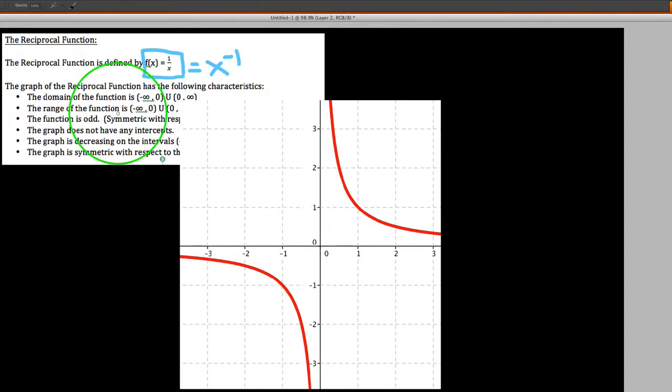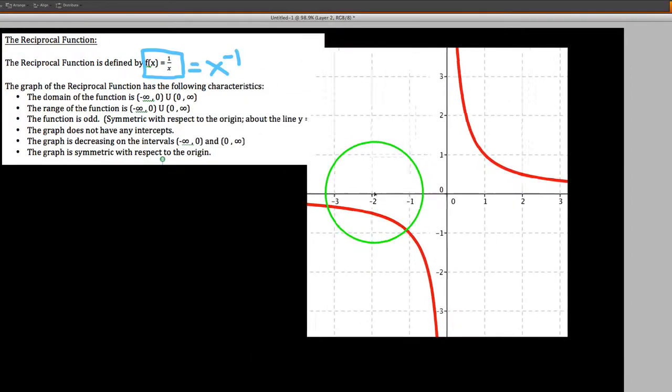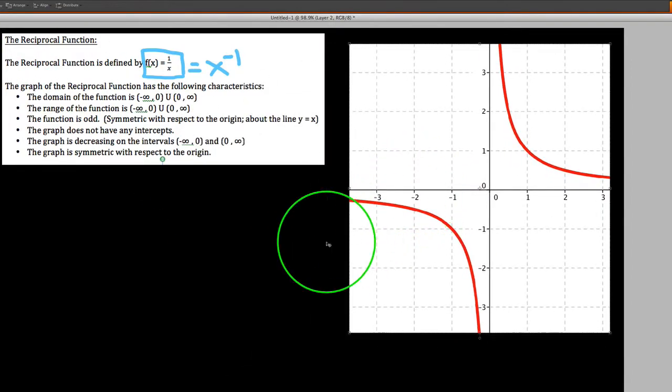Here is our reciprocal function. Let's discuss a few interesting properties about this function, starting with the domain. Notice the function itself, the actual rule. Domain are all input values that when I stick them into the function, I get a y value back. I've written the domain in interval notation as all x values starting way out at negative infinity, up to but not including the x value 0.